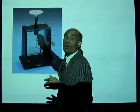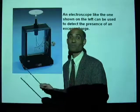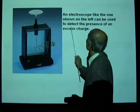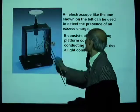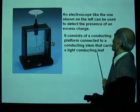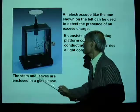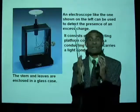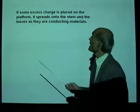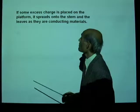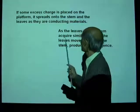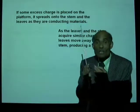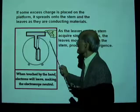The extent of divergence gives you an idea of the amount of charge placed on the electroscope. An electroscope like this can be used to detect the presence of an electric charge. It consists of a conducting platform, a conducting stem, and a conducting leaf. The stem and the leaves are enclosed in a glass case so that the leaves will not be disturbed. If excess charge is placed on the platform, it spreads onto the stem and the leaves, which are all conducting.